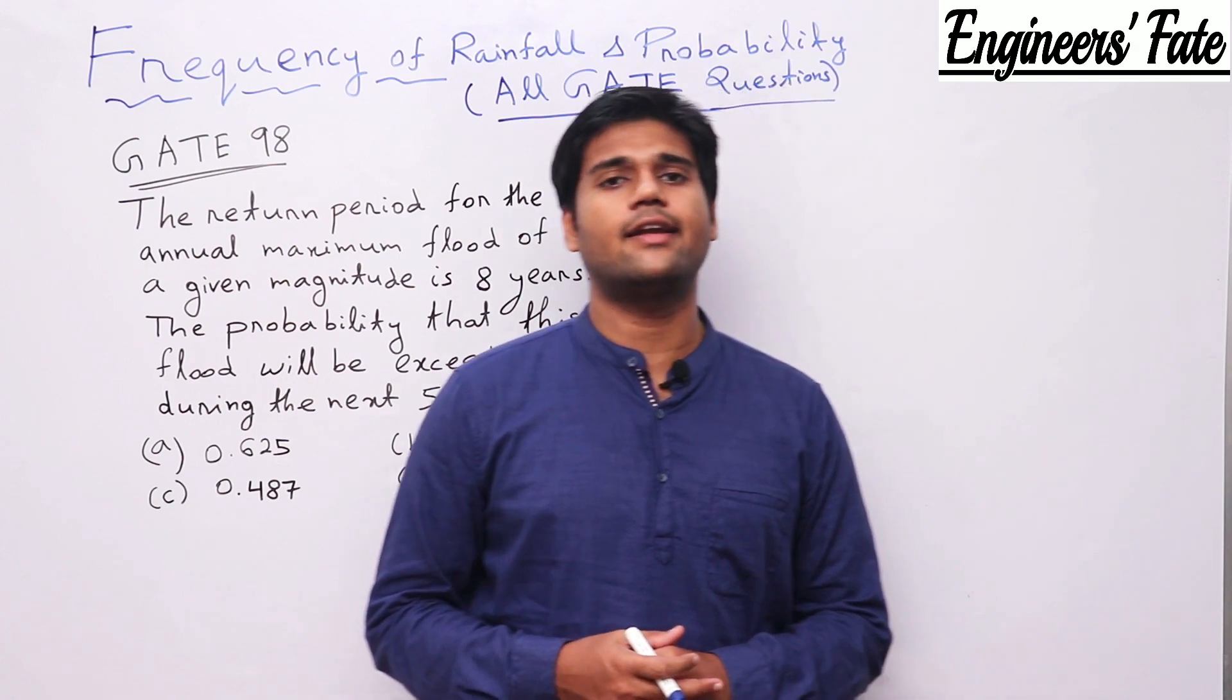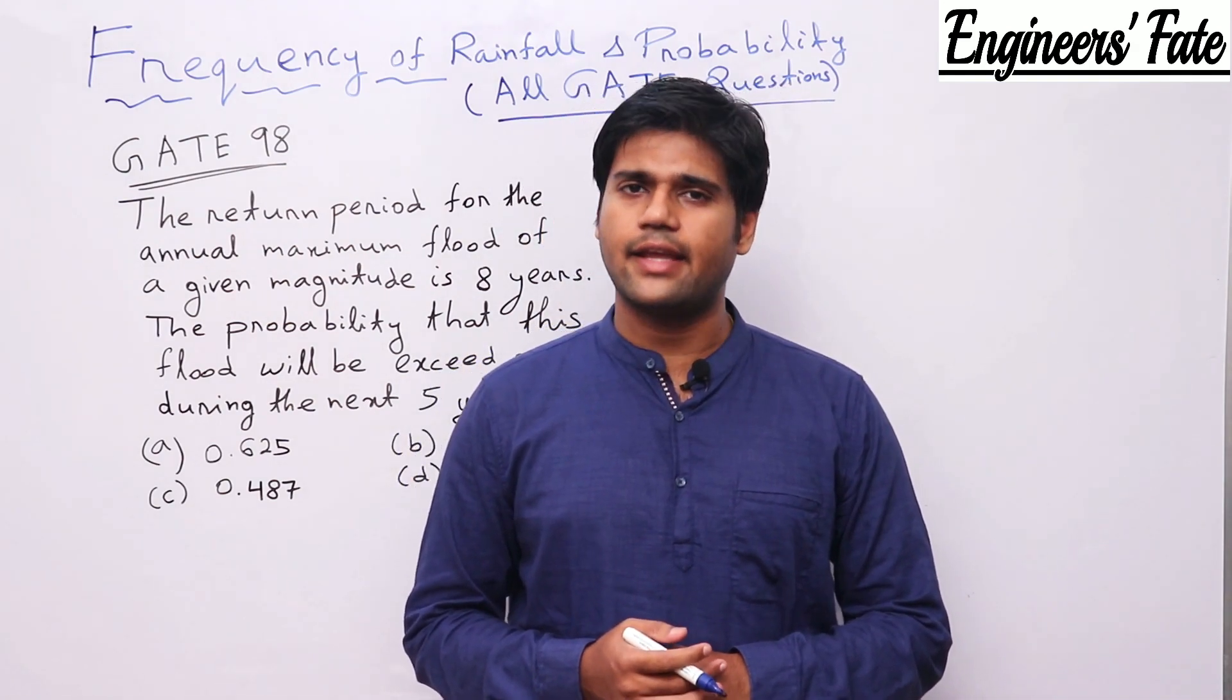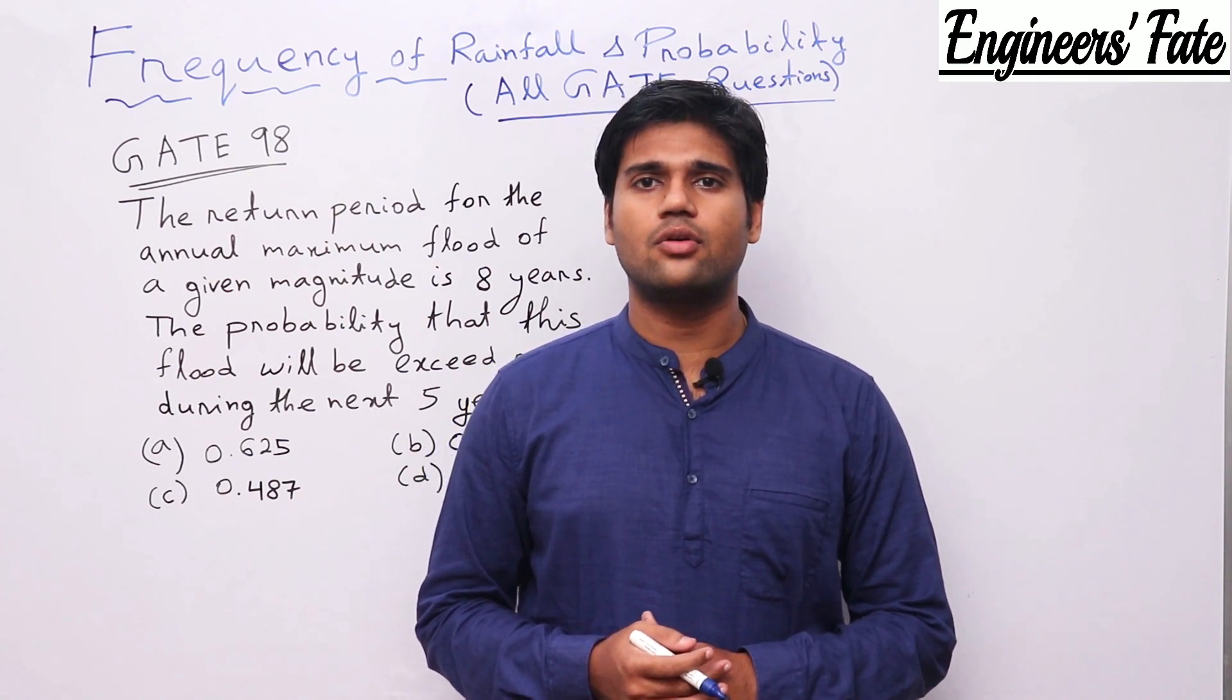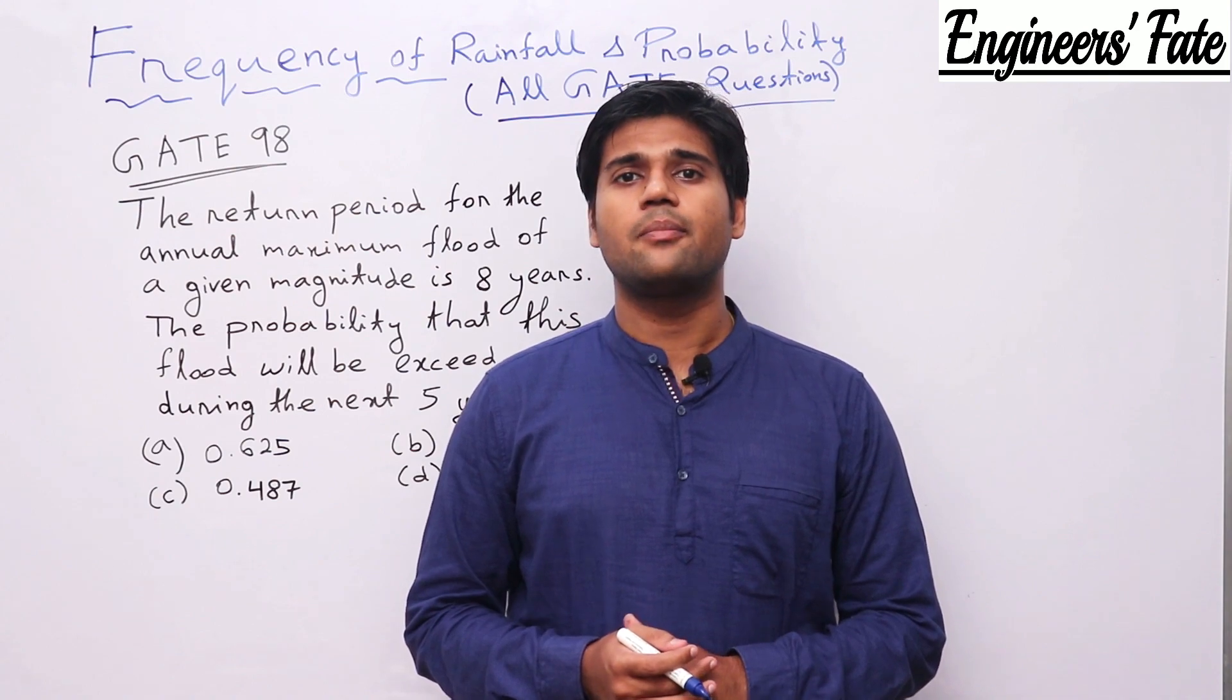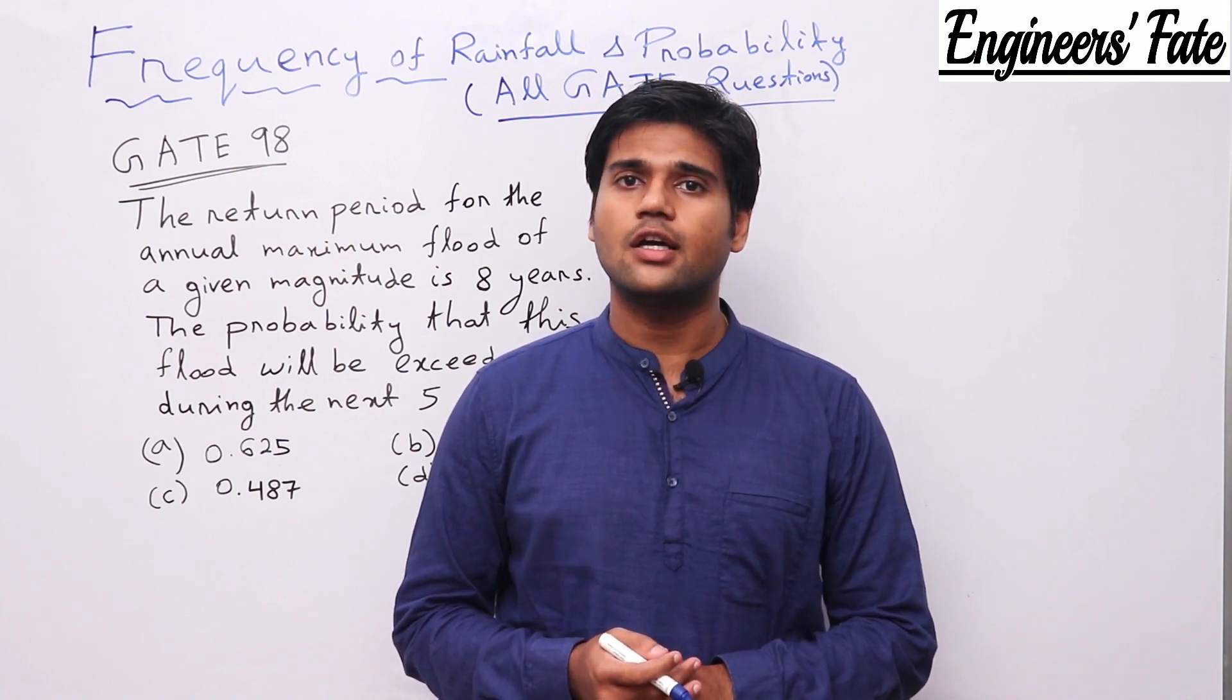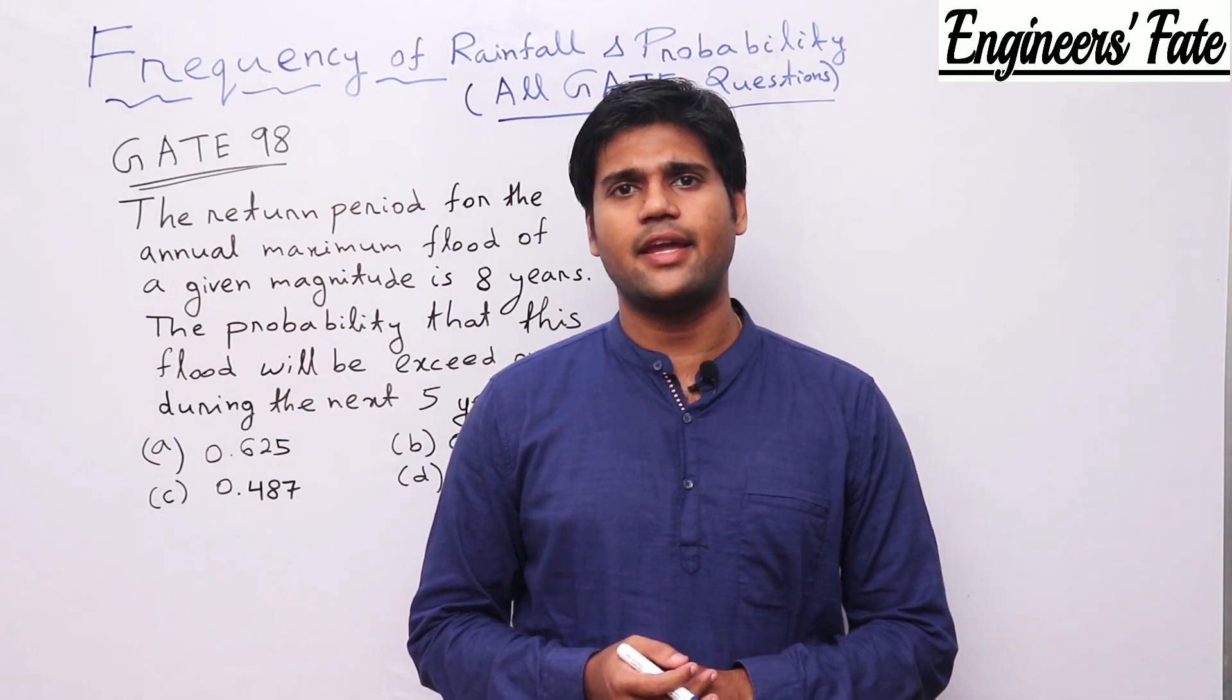Before solving the questions, let us revise the things. First, return period, that is T. Then probability P equal to 1 by T. Then Q. What is Q? Probability of rainfall not occurring in a given year. And Q equal to 1 minus P.